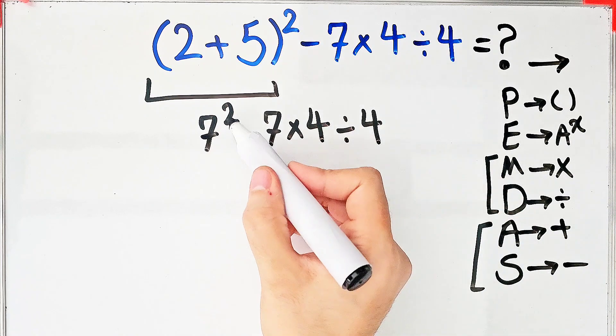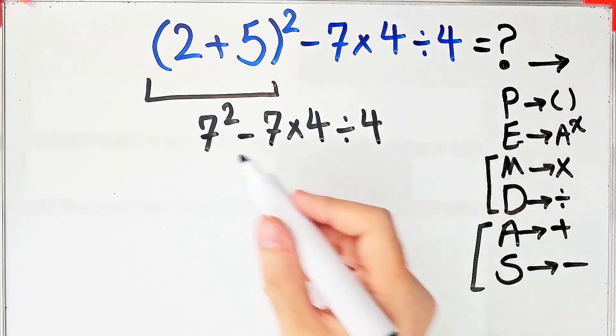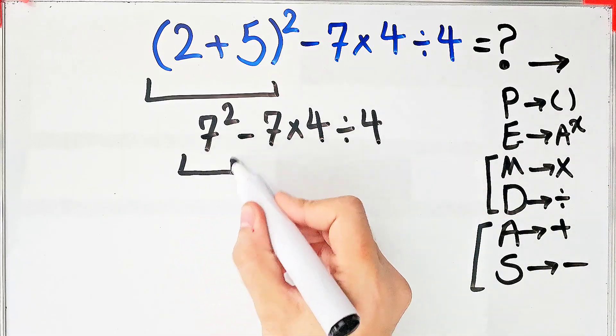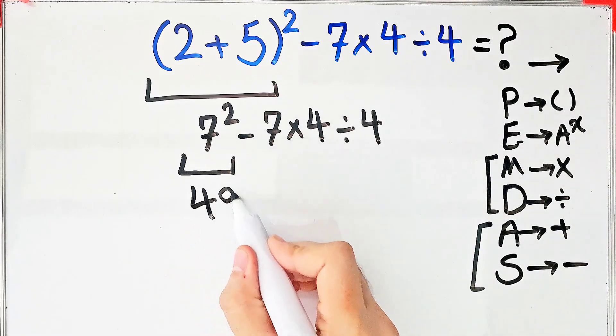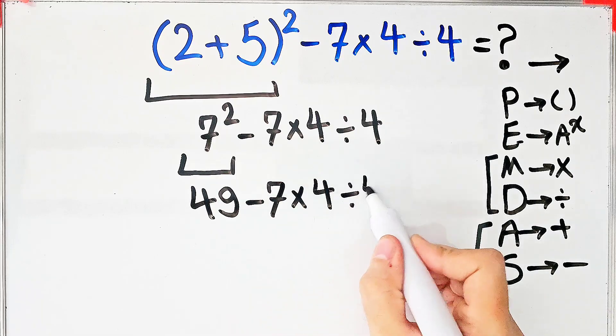Now we have exponent, subtraction, multiplication, and division. According to the PEMDAS rule, first we simplify this exponent: 7² equals 49. So we have 49 - 7×4÷4.